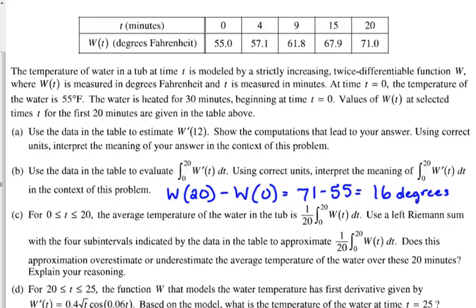It straight up tells us that the average temperature of the water is given by 1 over 20 times the integral from 0 to 20. It says use Riemann's sum, use the left Riemann's sum with the four subintervals to approximate it. I think we should be good with that. This is calculator active, so use your calculator.